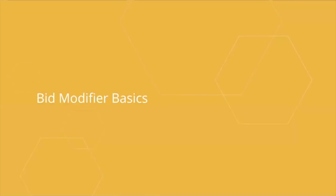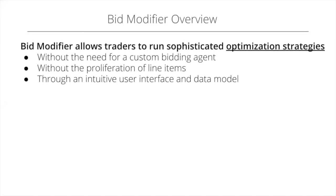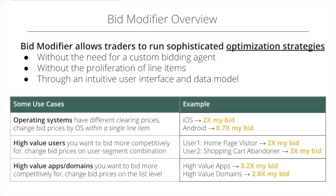A bid modifier allows you to do very sophisticated optimization strategies without necessarily having a bidding agent and without building tons of different line items to control bid prices — all through an intuitive UI and data model. Simple examples: for operating systems, you may value iOS more than Android and want to double bids on iOS while reducing them on Android. For high-value users like homepage visitors or shopping cart abandoners, you can bid more aggressively. For high-value apps and domains, you can bid more competitively.